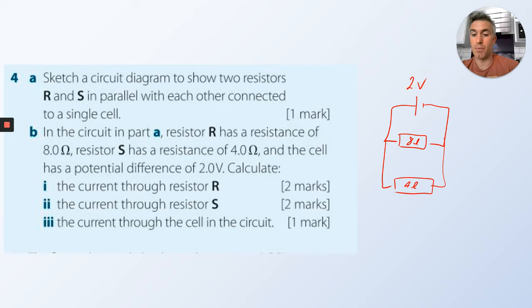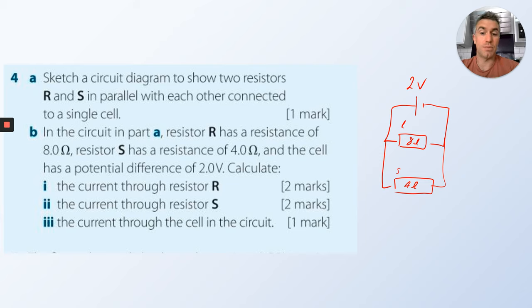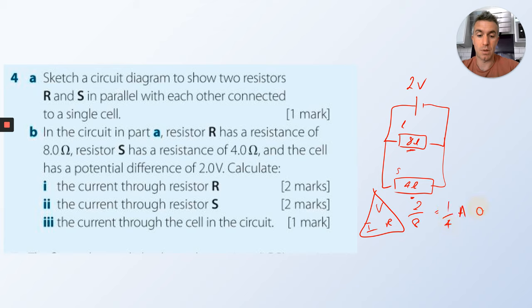Calculate the current through R. The rule for potential difference in a parallel circuit is that it is the same in each branch as it is across the battery. So you get 2 volts from the battery, 2 volts across R, and 2 volts across S. Using V over R for the R branch: 2 divided by 8 equals 0.25 amps.